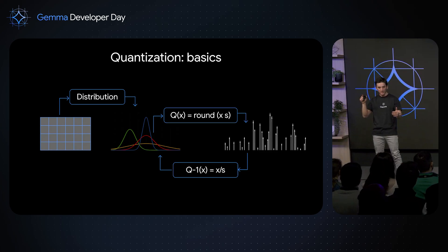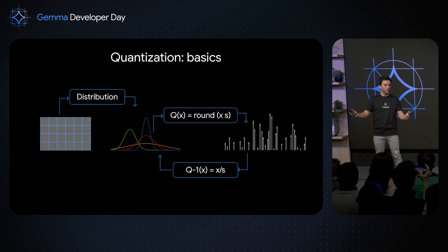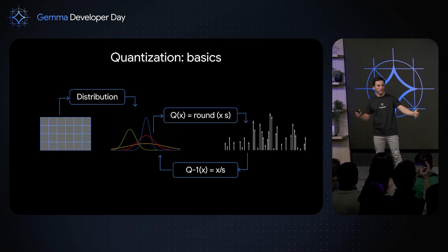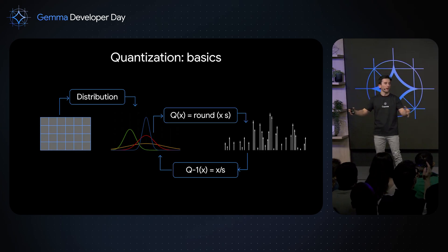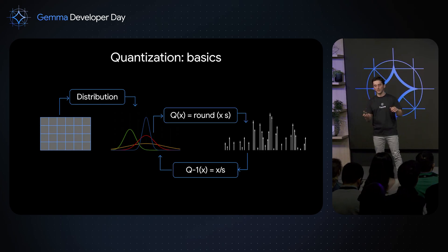Quantization is going from a continuous distribution down to a discrete representation using fewer bits. The most naive way is to scale your weights — that's the factor 's'. When you train your model, it's very unlikely the distribution will fit neatly into the integer range, say minus eight to plus seven for four bits, so you stretch the distribution to fit that support, then round to the closest integer. Those are your quantized weights. To preserve the model's dynamics, you then scale back — that's the dequantization operation.